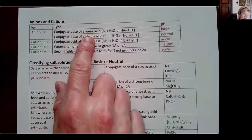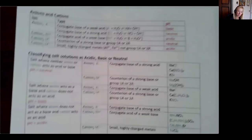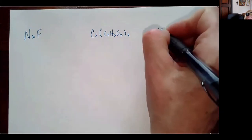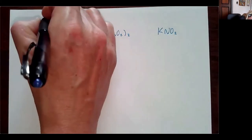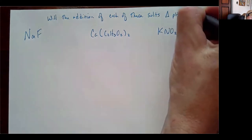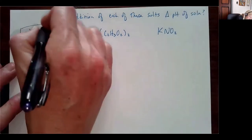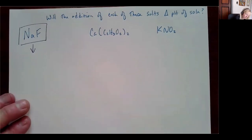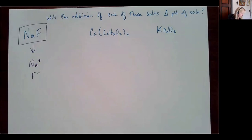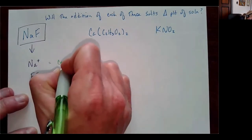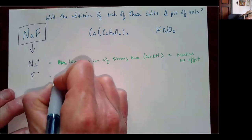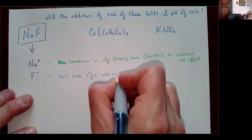Let's go through some examples. For NaF dissolved in water, I look at each ion separately. Sodium ion is the counter ion of a strong base, NaOH — so it's neutral, no effect. Fluoride ion is the conjugate base of a weak acid, HF — so it's going to act like a base.